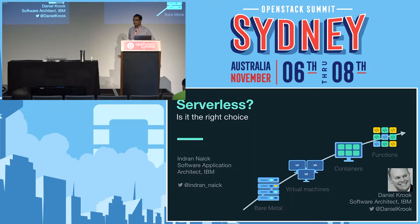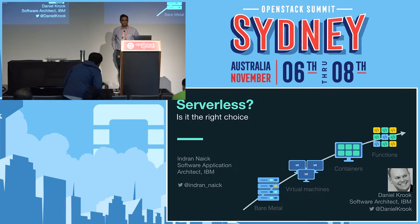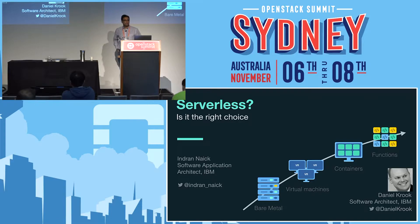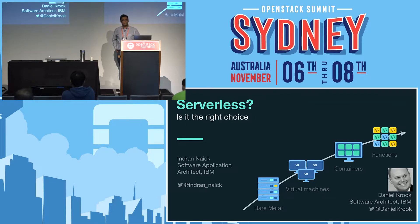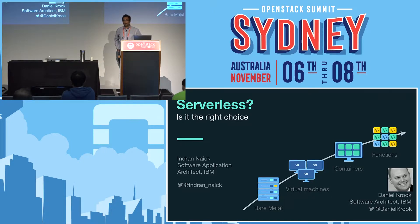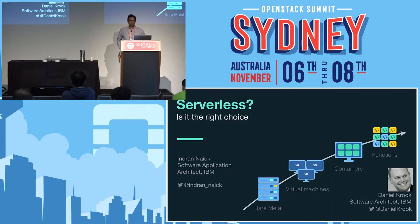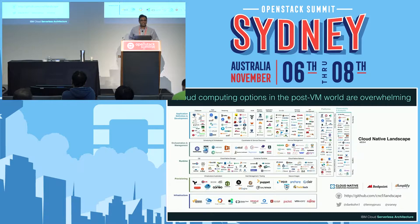We've got a fairly intimate audience, so we can keep it interactive if you have any questions during the presentation. We're going to talk about the state of cloud computing and the options that we have. We'll cover an introduction to serverless computing, and then compare cloud serverless architecture against two other container services — Cloud Foundry and Kubernetes — and discuss architectural considerations when making this choice. We'll use a sample application deployed through those three scenarios. If you have questions, please just raise your hand.